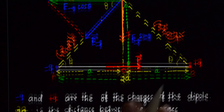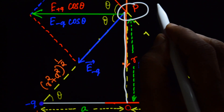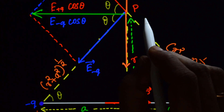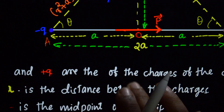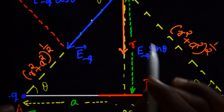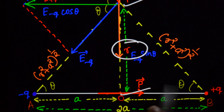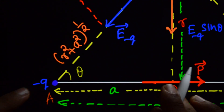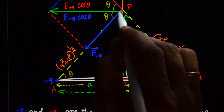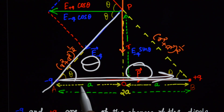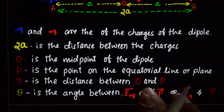P is the point on the equatorial line or plane at which we are interested to find the electric field due to this dipole. R is the distance between the midpoint O of the dipole and the point P. This is the description of the diagram.